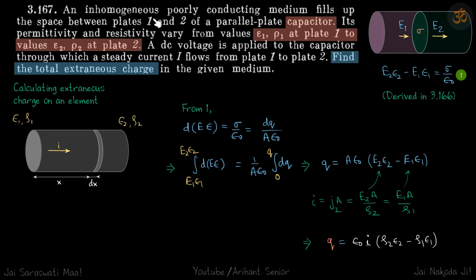We have an inhomogeneous poorly conducting medium filled between capacitor plates. Its permittivity and resistivity both vary from one end to another — we don't know the exact function, but at one surface it is ε₁ and ρ₁, and at the other end it is ε₂ and ρ₂. We are given a current I flowing through it, and we need to find the total extraneous charge in the medium.